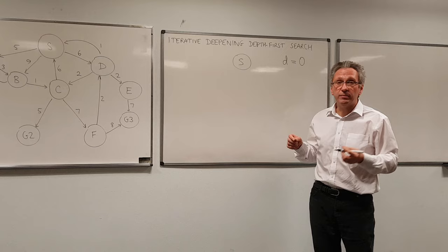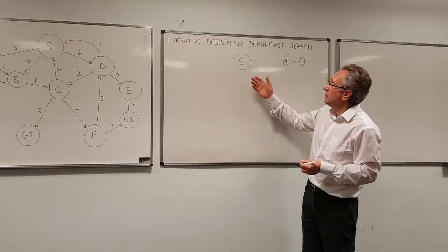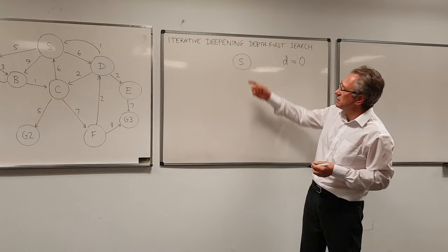Let's see how this works. So we start with a depth bound of zero. This means we'll run depth first search but we're not allowed to elongate the tree at all. We just have to leave it like that. So we ask, is that the goal state? No, we're not.